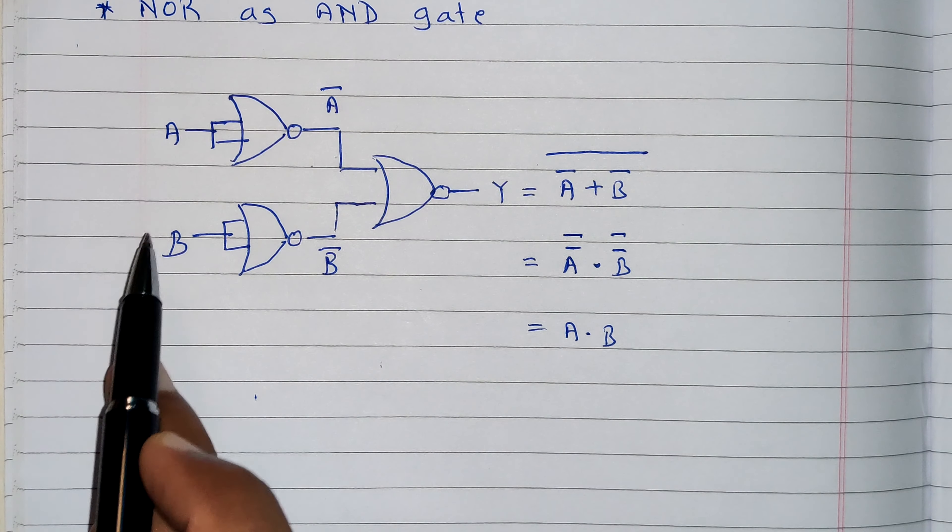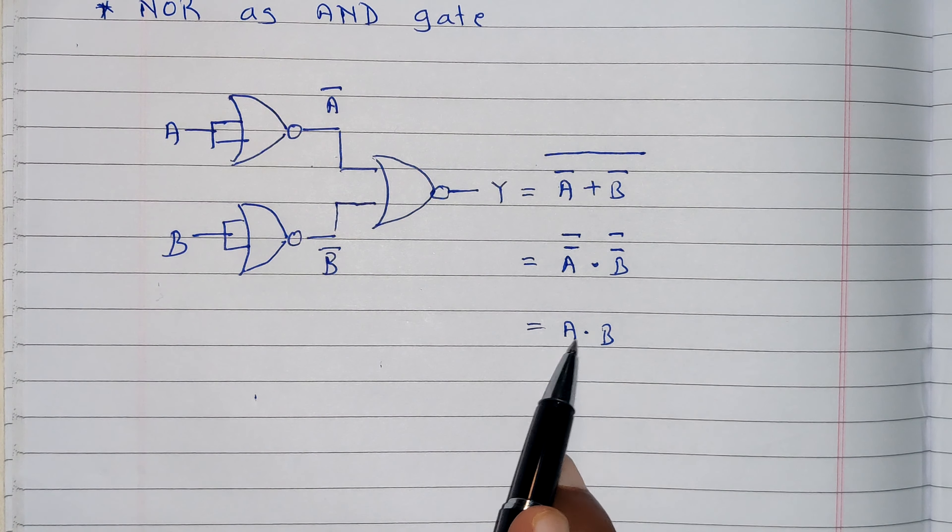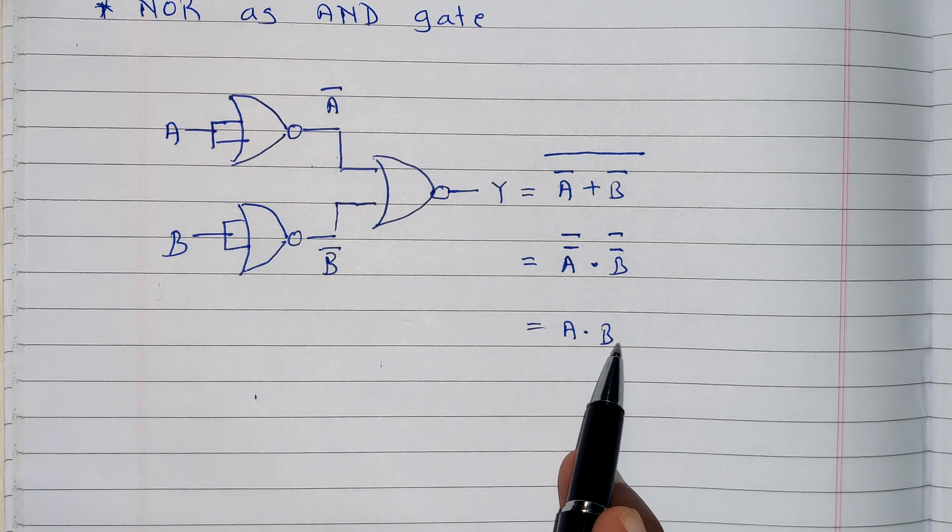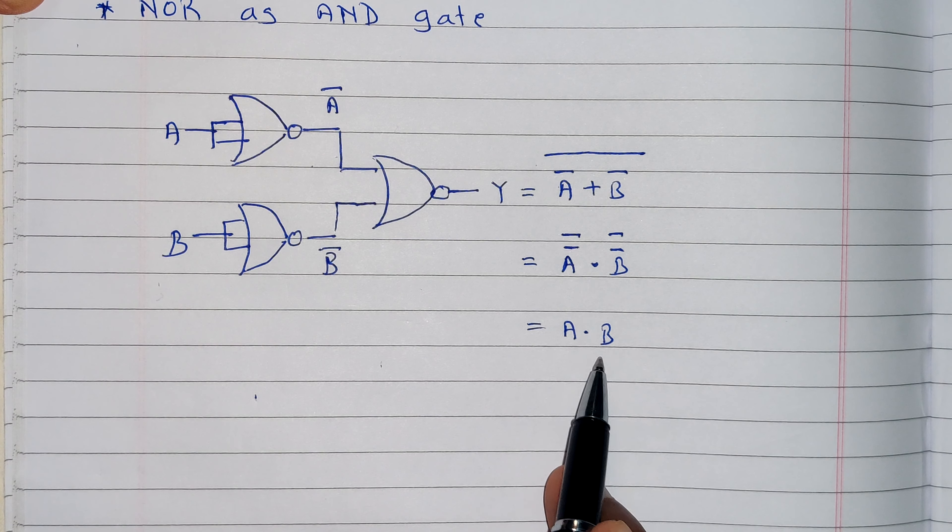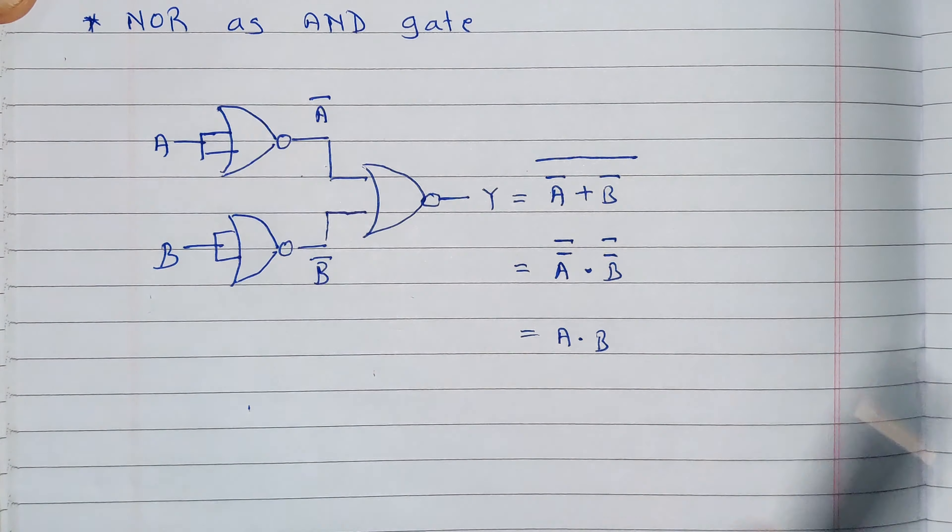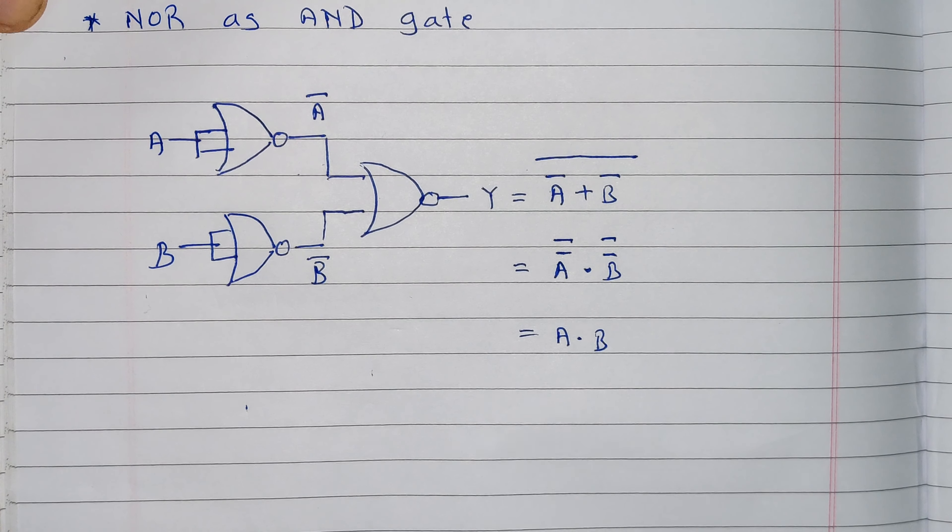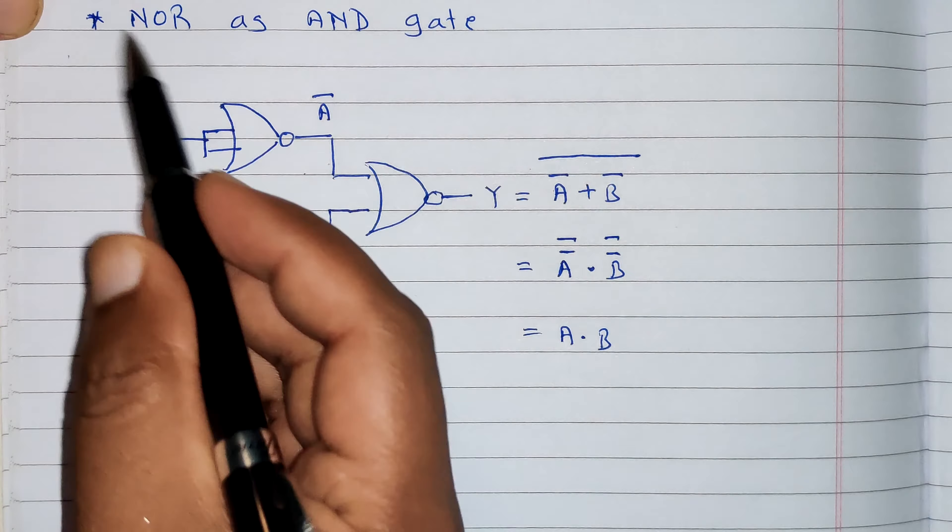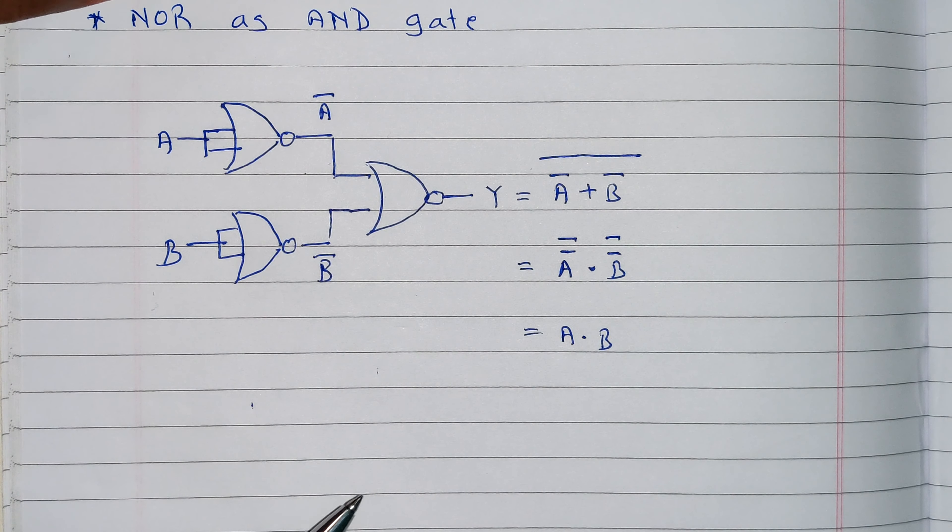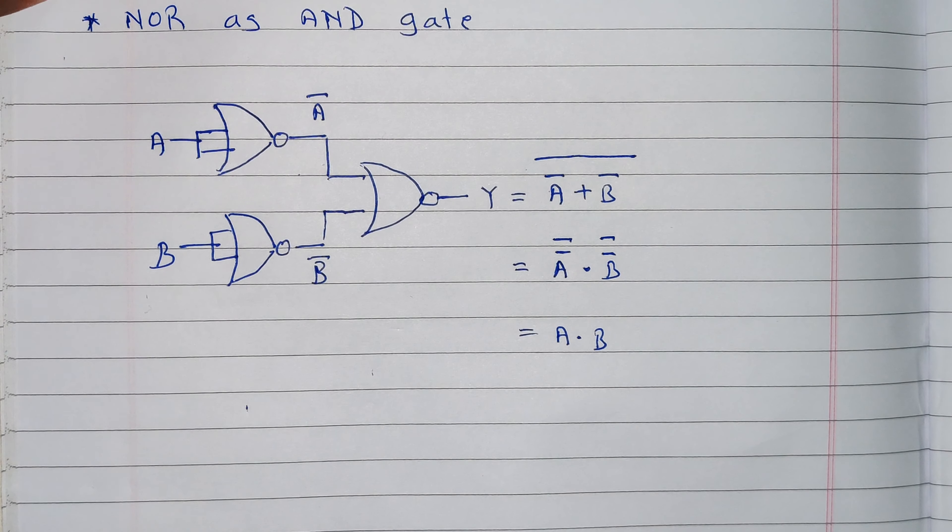So we started with inputs A and B, and towards output we are getting A dot B, and A dot B is a function performed by AND gate. Therefore, this entire circuit is called NOR as AND gate. Now let's see the truth table of this gate.